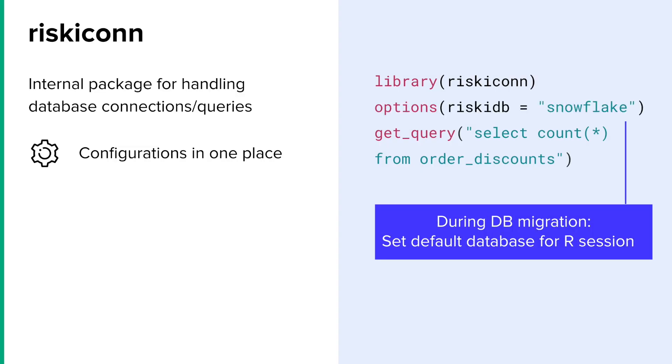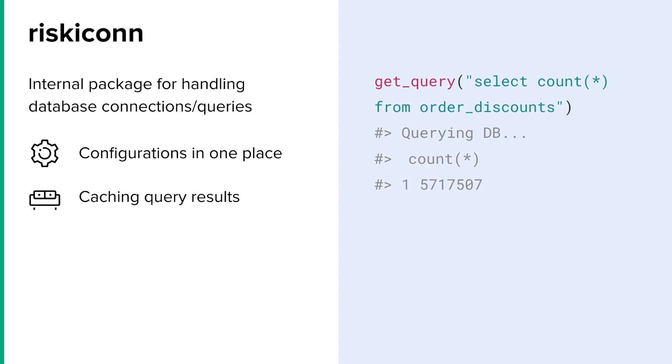There was one point recently where we actually had to migrate from one database to another — it was a bit of a slog. But one thing that helped smooth it over was an option we added to switch between the old database or the new database. You just had to do it once at the beginning of your R session and it would last for all of your get_query calls. So we didn't have to go in and change the code to specify the database connection for every single query. One small thing we do a lot is caching query results — the first time you ask the database directly, the second time it will have stored the result in some temporary file. Unless you force it to connect to the database again, you get a much quicker response, and that saves a lot of time as you're iterating through your analysis.